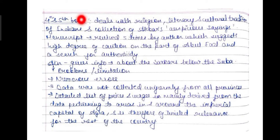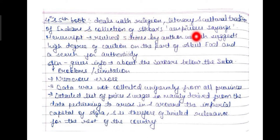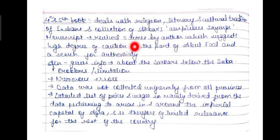The fourth and fifth books deal with religion, literary culture, tradition, and a collection of Akbar's auspicious sayings. The manuscript was revised five times by the author, which suggests a high degree of caution on the part of Abul Fazl and a search for authenticity.